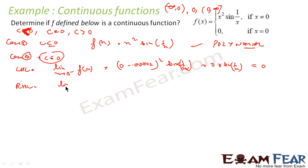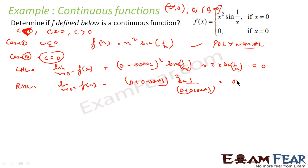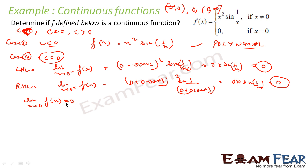Similarly, the right hand limit is limit x tends to 0 plus of f(x), that is 0.000001 squared times sin(1 by 0.000001). This is nothing but 0 times sin of something, which is also equal to 0. So left hand limit and right hand limit are equal, the limit exists and that value is 0. Now f(0) is also equal to 0, so the function is continuous at x equal to 0.